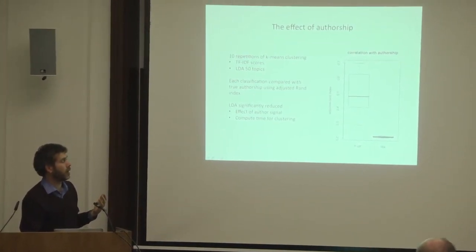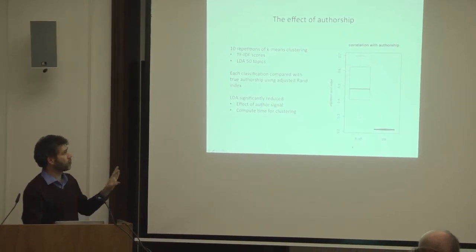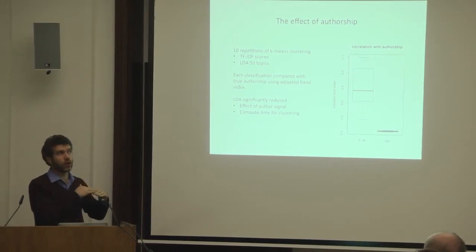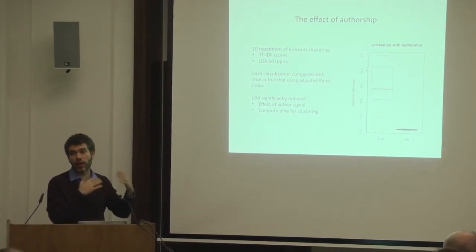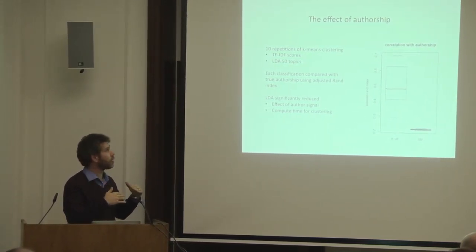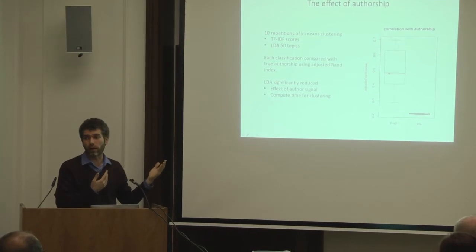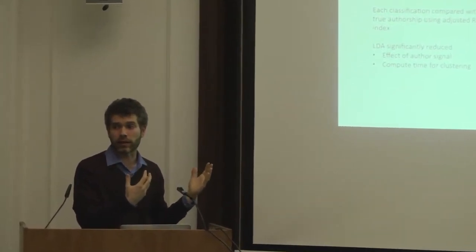A score of 0 means the unsupervised computer classification is no more associated with true authorship than chance; 1 means they're perfectly aligned. With just TF-IDF, we can put a number on how closely the classification accords with true authorship — which is something we don't want in this case. LDA is a lot lower, so we can say it's better. At the same time, if you run LDA a hundred times in a row with such tiny samples, it's not even related to itself all that well, which tells you it's not stable.